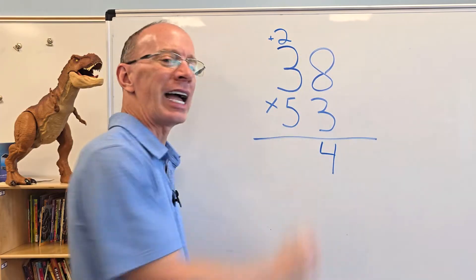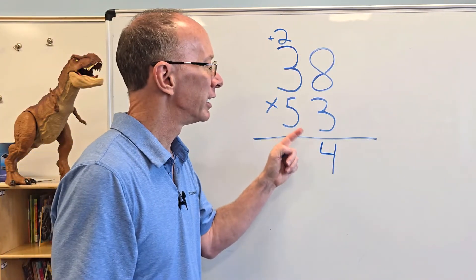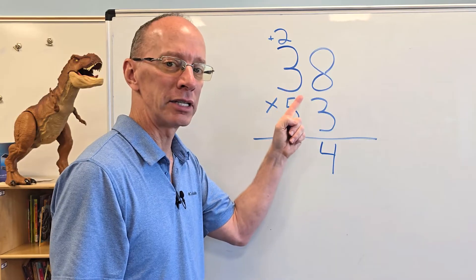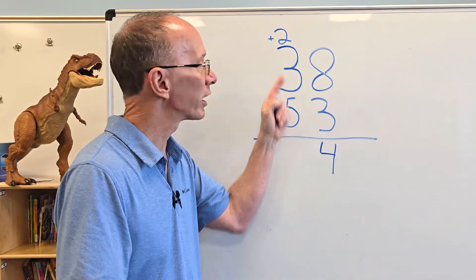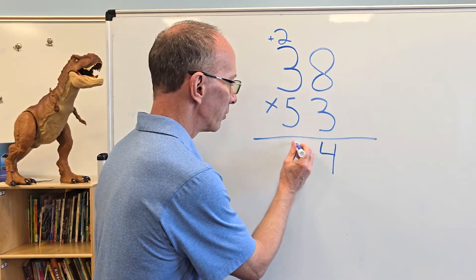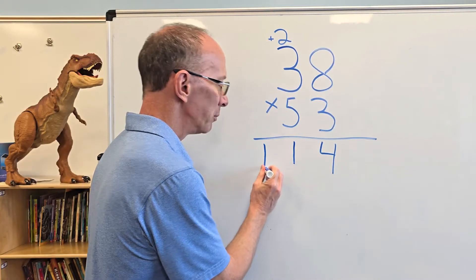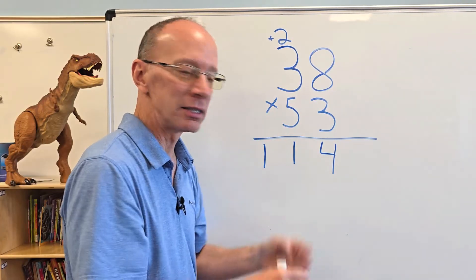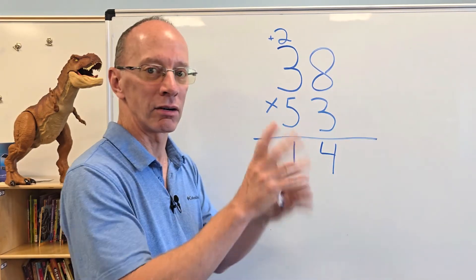We're going to be adding that 2. Now I can do 3 times 3. 3 times 3 is 9, don't forget, 10, 11. So I put 11 right here. And when you're doing problems like this, try to keep those numbers straight. It just helps organize things so you don't get confused later on.